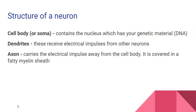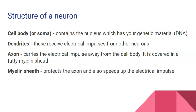The axon carries the electrical impulse away from the cell body, and it's covered in a fatty myelin sheath. The role of the myelin sheath is, firstly, to protect the axon, but it also speeds up how fast that electrical impulse moves down the axon.